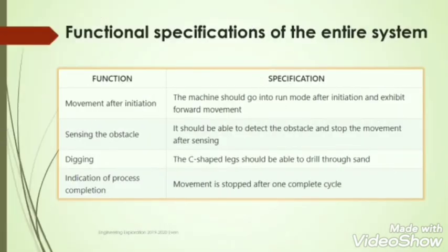Now let's go to the functional specifications of the entire system. Movement after initiation: the machine should go into run mode after initiation and must exhibit forward movement. Sensing the obstacle: it must be able to detect the obstacle and stop the movement after sensing. Digging: the C-shaped leg should be able to drill through sand, which goes simultaneously with the movement part. Indication of process completion: movement is stopped after one complete cycle.